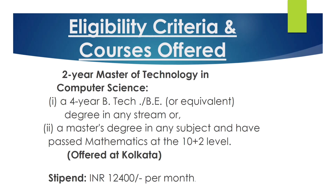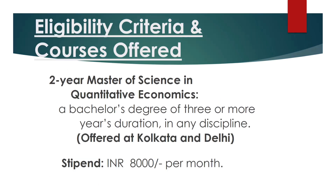For the two-year Master of Technology in Computer Science, candidates need a 4-year B.Tech or B.E. or equivalent degree in any stream, or a master's degree in any subject, and must have passed Mathematics at the 10+2 level. Stipend is 12,400 per month. For the two-year Master of Science in Quantitative Economics, a bachelor's degree of 3 or more years in any discipline is required, with a stipend of 8000 per month.